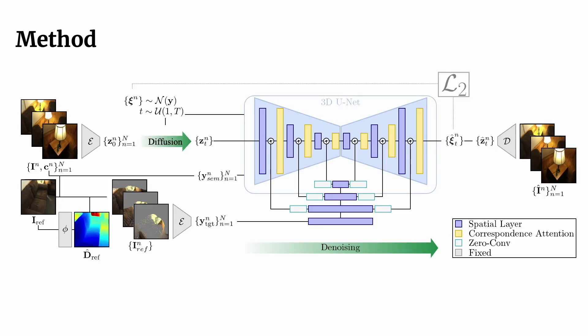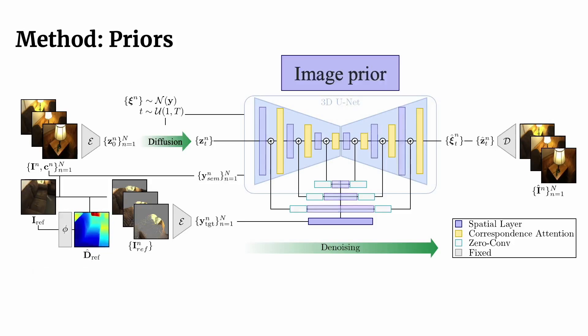We address the ill-posed nature of the task by leveraging three priors. A depth estimator provides strong 3D grounding, the pre-trained image diffusion model leads to high image fidelity, and by initializing the correspondence attention with the weights of a pre-trained video diffusion model, we bootstrap our approach for strong consistency between the novel views.